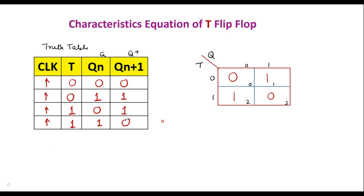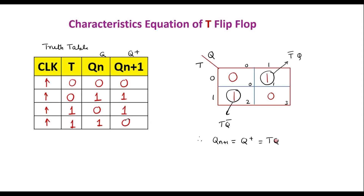Cell 2 corresponds to row 1, column 0 — its value is TQ̄. Cell 1 corresponds to row 0, column 1 — its value is T̄Q. Therefore, the characteristic equation of the T flip-flop is: Qn+1 = Q+ = TQ̄ + T̄Q, which is nothing but T ⊕ Q (T XOR Q).